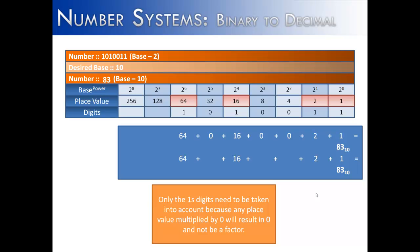When we add together those digits, we get 64 plus 16 plus 2 plus 1 is 83. And so 1010011 is 83 in base 10. So this is a convenient way to convert a binary number into base 10.